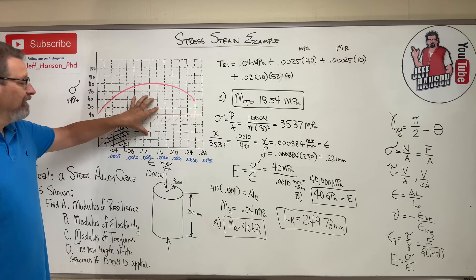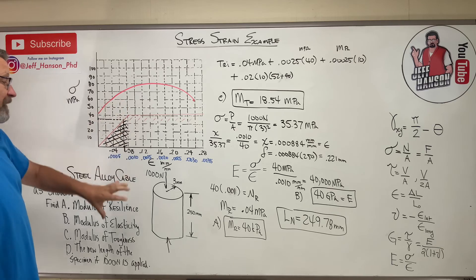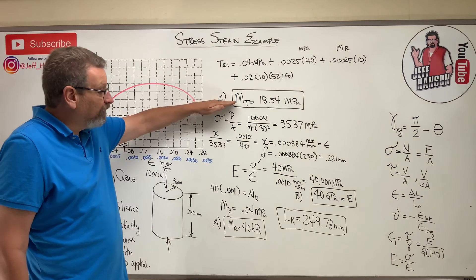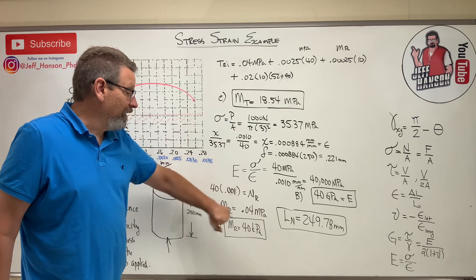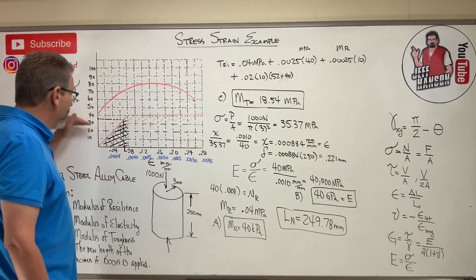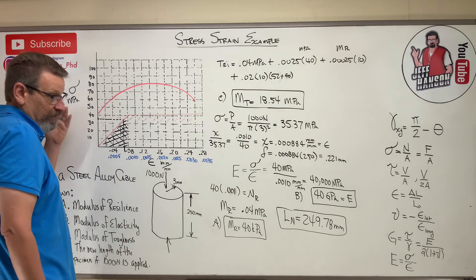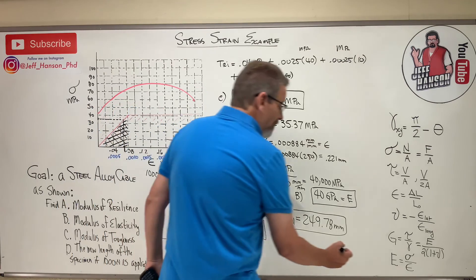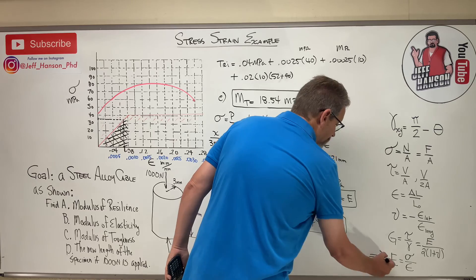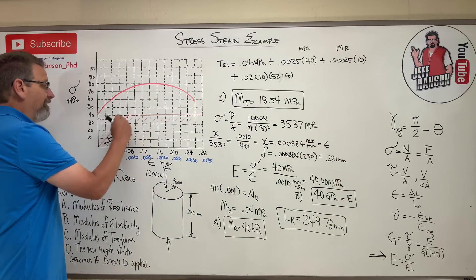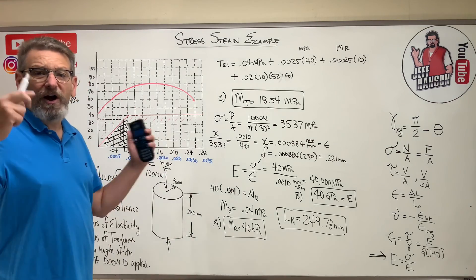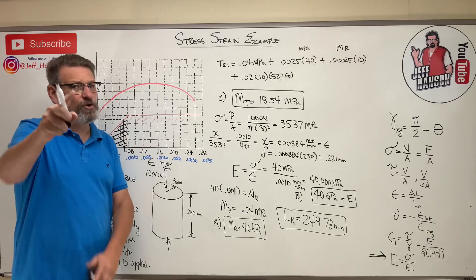We were able to use our stress-strain diagram to find out some information about these specimens: modulus of toughness, modulus of resilience, and change in length. You could apply different forces and do the same process. One important reminder: this stress-strain equation E = sigma/epsilon is only valid on the elastic portion of the curve — anywhere else it's no longer valid, so be careful about that. I hope this helped — see you on the next video.